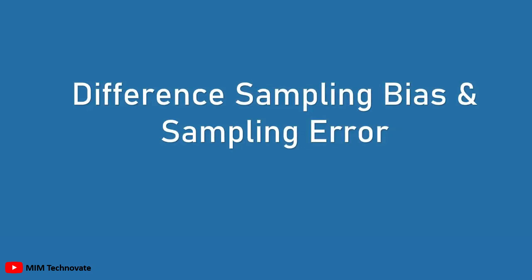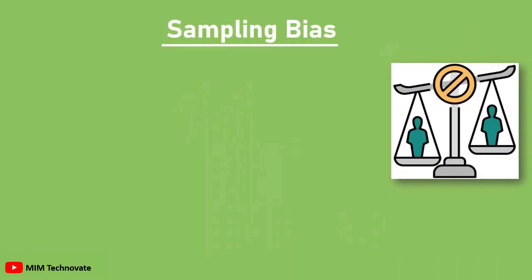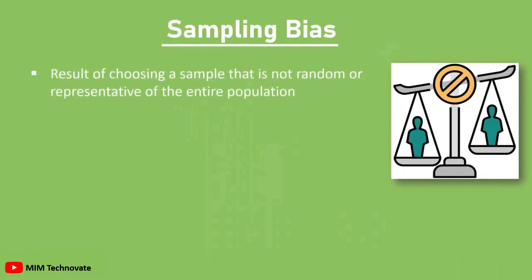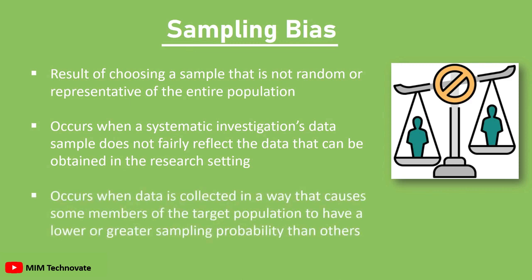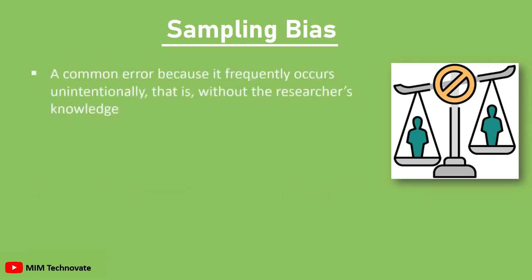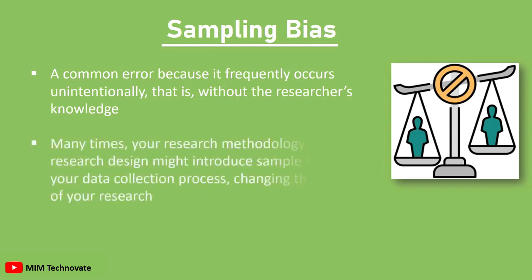Sampling bias is a result of choosing a sample that is not random or representative of the entire population. It occurs when a systematic investigation's data sample does not fairly reflect the data that can be obtained in the research setting. Sampling bias occurs when data is collected in a way that causes some members of the target population to have a lower or greater sampling probability than others. It is a common error because it frequently occurs unintentionally, without a researcher's knowledge. Many times, your research methodology and research design might introduce sample bias into your data collection process, changing the results of your research.